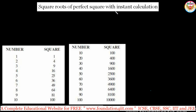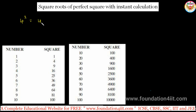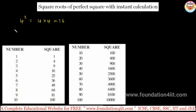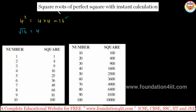Square roots of perfect squares with instant calculation — without taking much time, just by observing the number, how to find the square root only for perfect square numbers. For example, 4 squared is 16, so the square root of 16 is 4. 16 is a perfect square, and we can use this instant calculation for any perfect square.